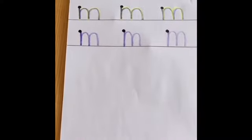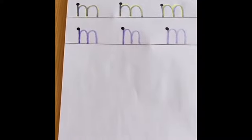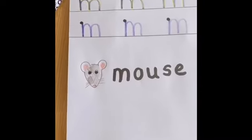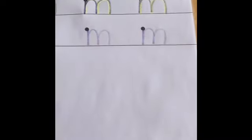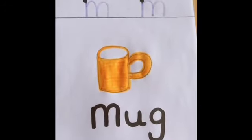So now I'm going to draw a picture that starts with the sound m, and I want you to have a guess at what you think it might be. It's a mouse. Now have a guess at what you think this picture might be. It's a mug.